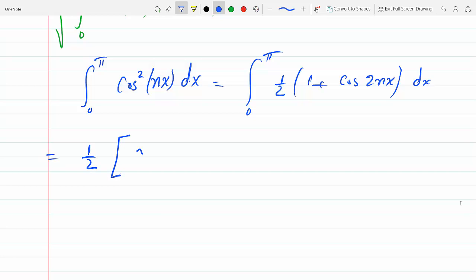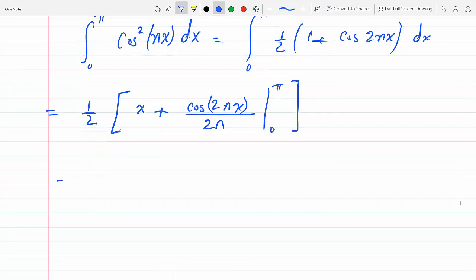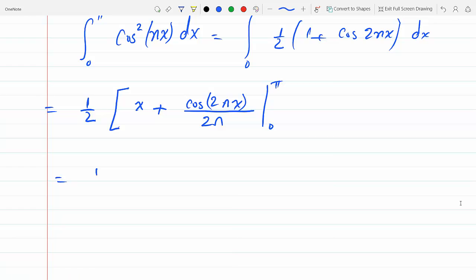And if I integrate this piece by piece, the first one is x, the second one is cosine(2nx), and the chain rule over 2n from zero to pi. You should be attempting this one, you shouldn't just be looking. And so this is from zero to pi.